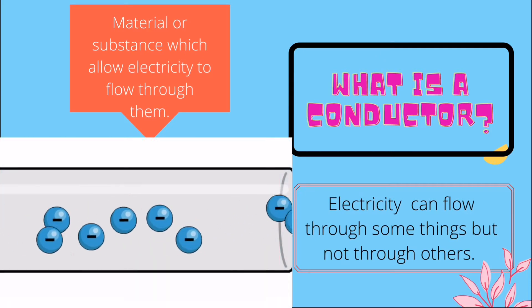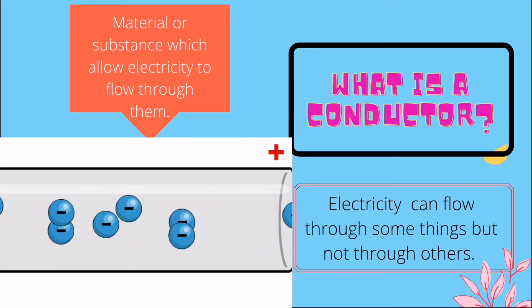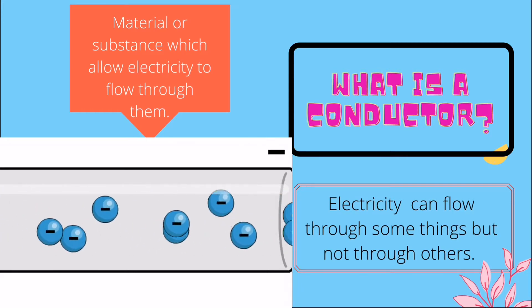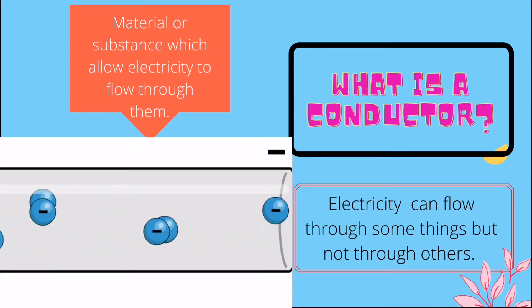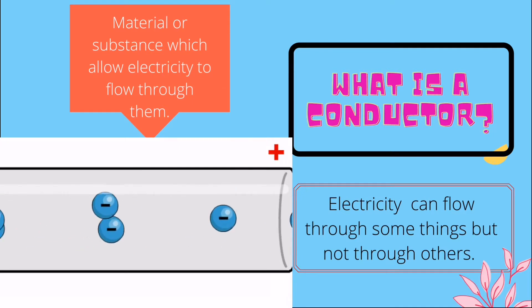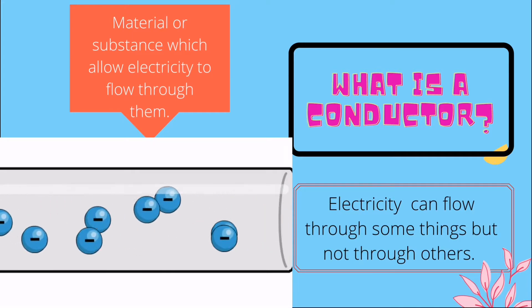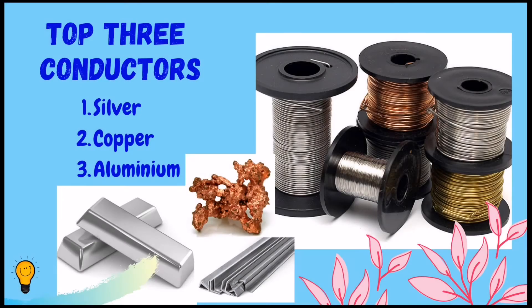Anything that allows electricity to flow through it is a conductor. Conductors are materials or substances which allow electricity to flow through them. Metals are good conductors of electricity — they allow the electrons from atoms in them to flow easily, which makes them good conductors.